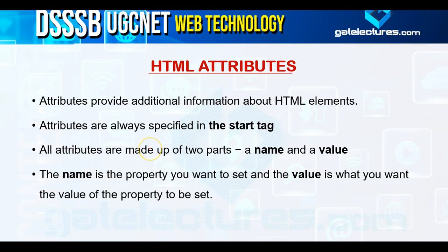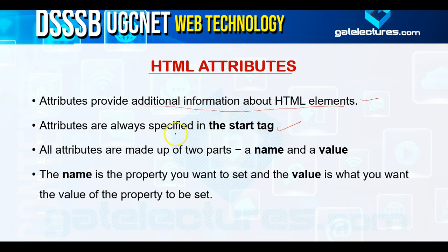We have seen few HTML tags and their usage like heading tags, paragraph tags, all the basic tags we have already studied. But most HTML tags can also have attributes, which contain additional information about the HTML elements. Attributes are always specified in the starting tag — they are used to define the characteristics of an HTML element and are placed inside the opening tag.